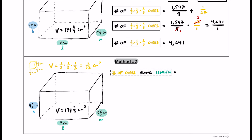Let's start with the length. The length is 7 centimeters, and we want to see how many times a one-third length fits inside it. So we compute 7/1 ÷ 1/3, which means multiplying by the reciprocal: 7/1 × 3/1 = 21. So 21 of these little cubes fit along the length.